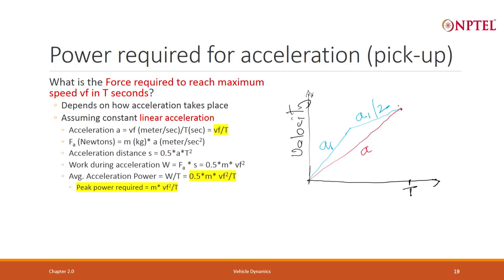At time t, it reaches the final velocity Vf. What is the acceleration? The final velocity is Vf divided by t. Time taken is t. So that is the acceleration required if it is constant. What is the force? It is mass into the acceleration, which is Vf by t.